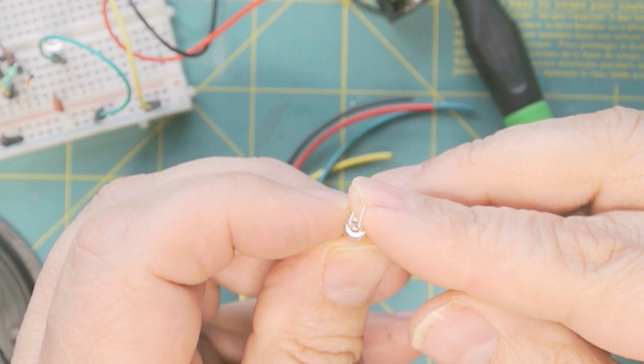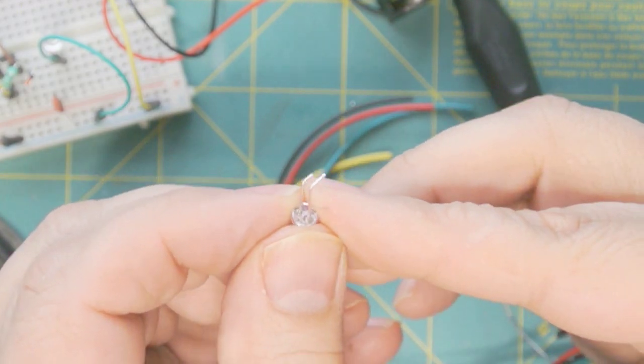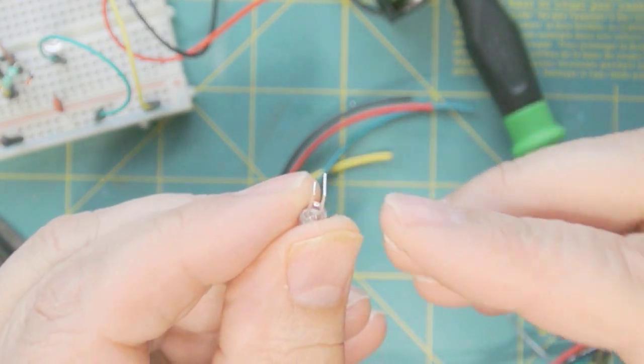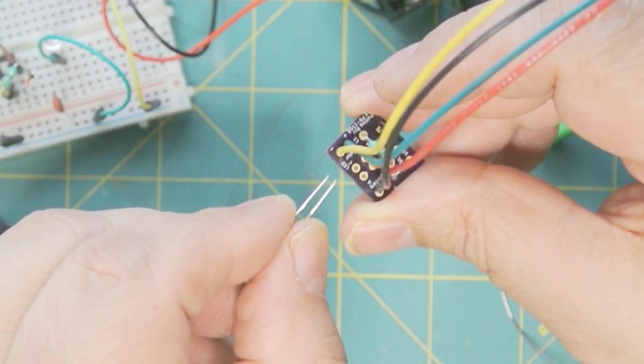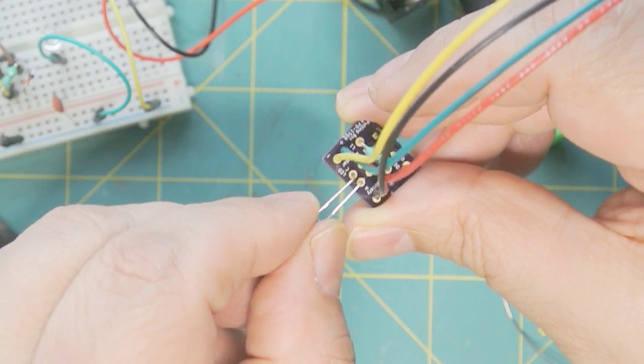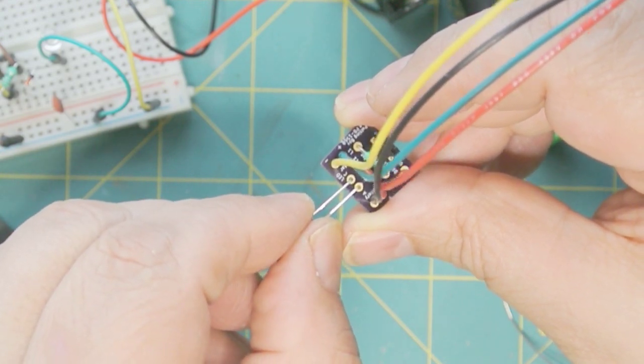When we have our LED, we want to just put a little bend in the end. You notice there's a short lead, and the short side of the LED is going to go where it's marked on the board C for cathode. It's going to go in like that.